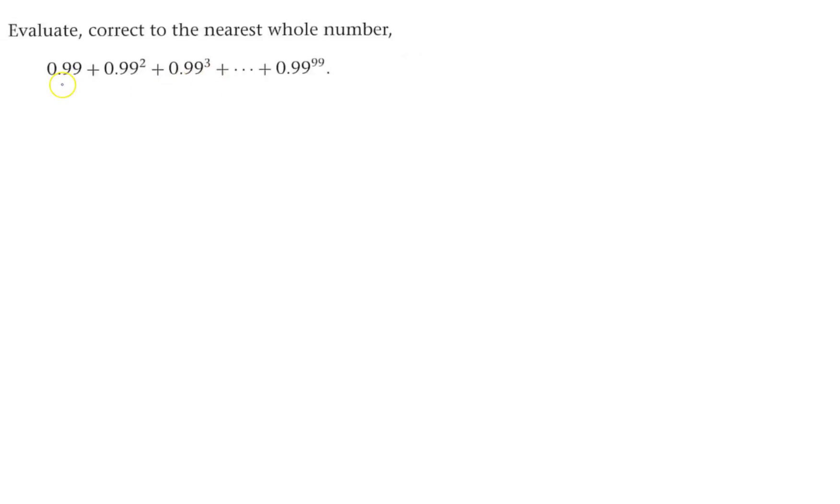We have a sequence here where the first number a is 0.99. To go from 0.99 to the next term, you multiply by 0.99, and here you multiply by 0.99 again. So each time you multiply by 0.99.